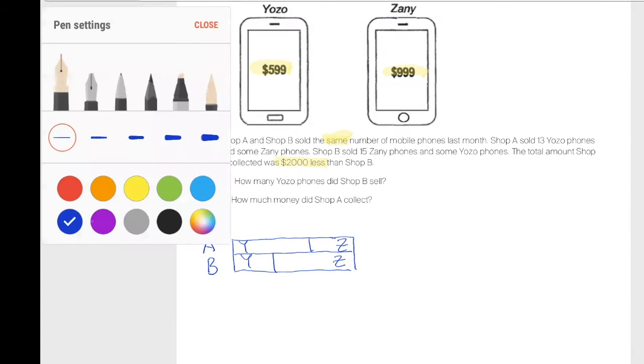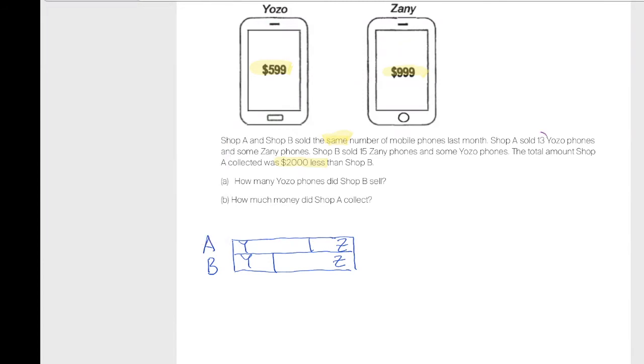The next thing I want to do is use what they said over here. Shop A sold 13 Yozo phones, so Y here is 13. Shop B sold 15 Zeny phones, so 15 is over here Z. Now my question to you is, how do I find the overlap here? How many phones represent the overlap?